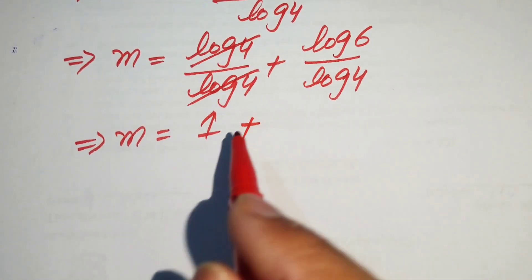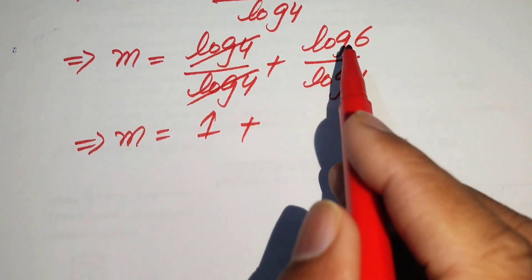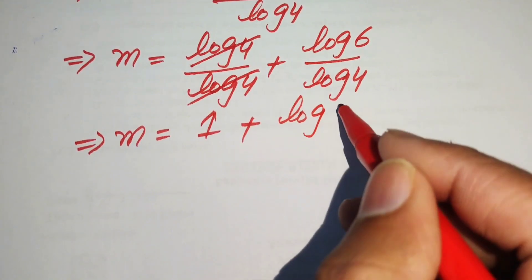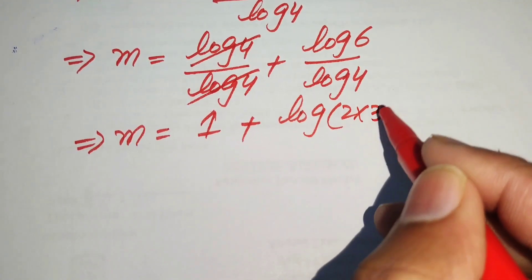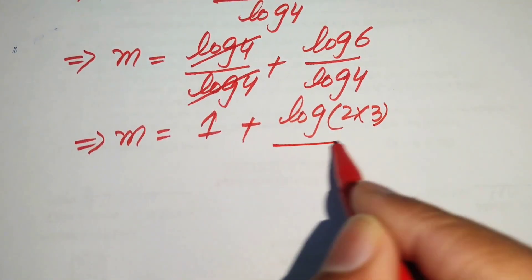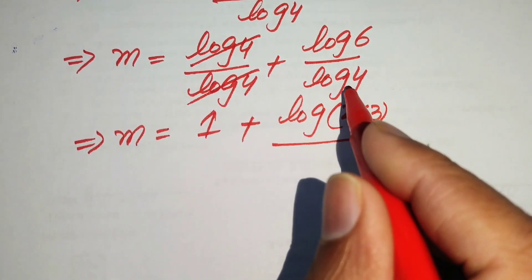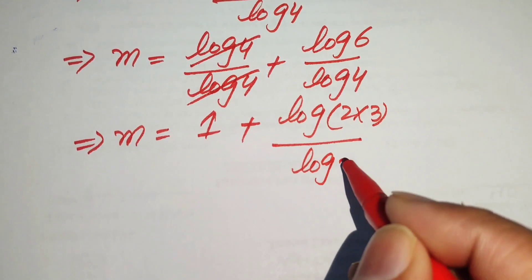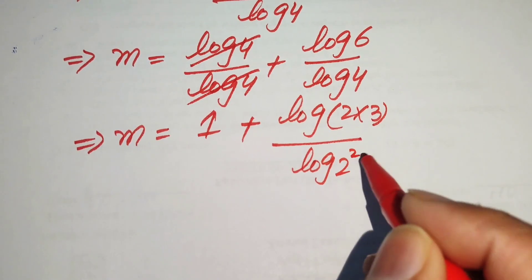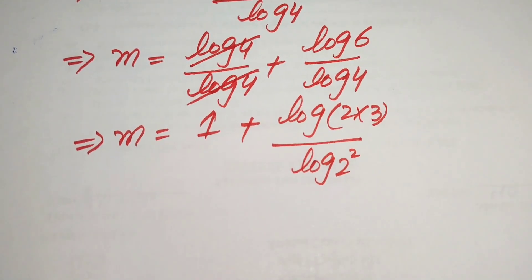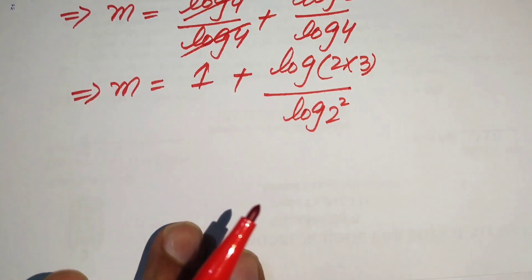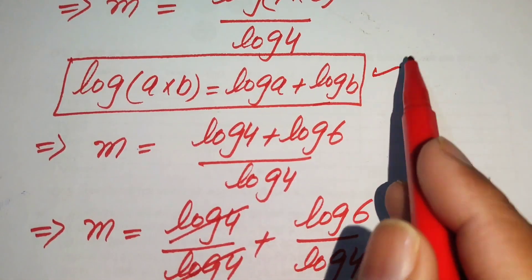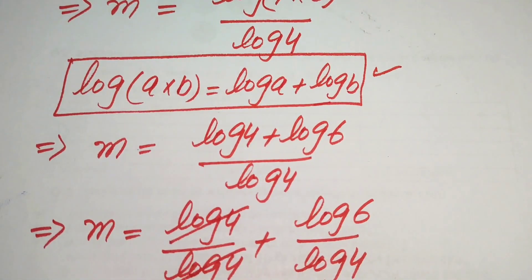We rewrite log 6 as log of 2 times 3, and we rewrite log 4 as log of 2 squared. After this step, we again use this nice product property of log.